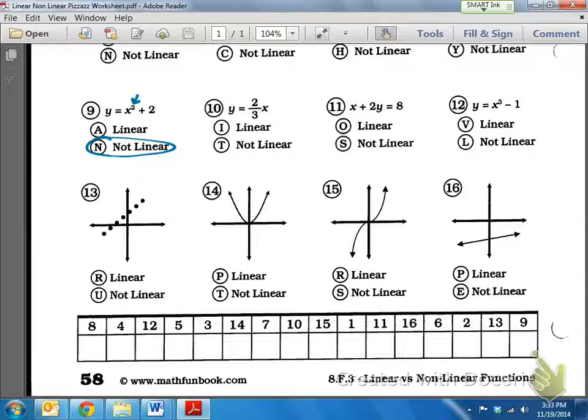On number 10, it's 2 thirds x. Now, again, we don't care about the number in front. We only care about if there's an exponent in front of x. I mean, on top of x. And there's no exponent. So, see, there's nothing here on top of x. So, that means it is linear. This is a linear equation. So, the same goes for numbers 11 and 12.